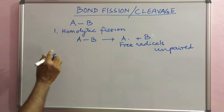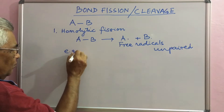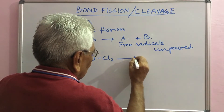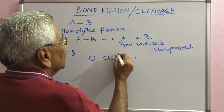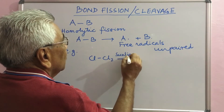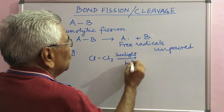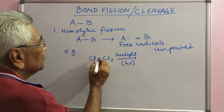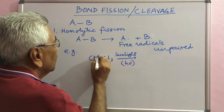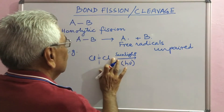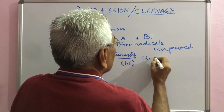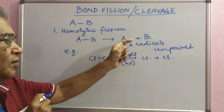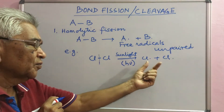An example: if you take a chlorine molecule and subject it to sunlight — a photon, h-nu, which is the symbol for sunlight — then this breaks from the middle and you have Cl plus Cl, two chlorine atoms. If they are groups, they will be known as free radicals.